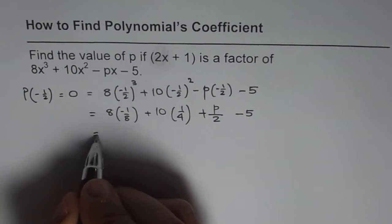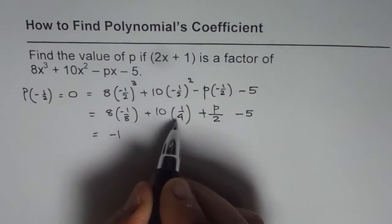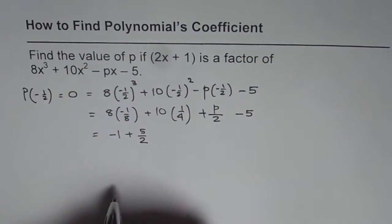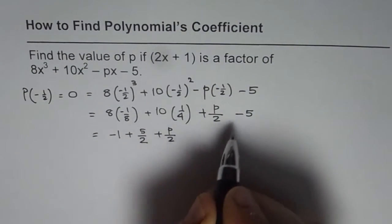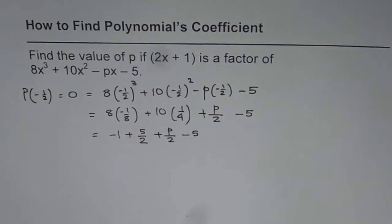Now this could be simplified and written as minus 1, and 10 divided by 4, I could simplify this as 5 over 2. Here we have plus p over 2, and then we have minus 5. All this is equal to 0.